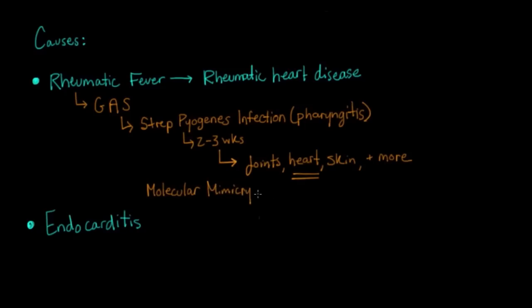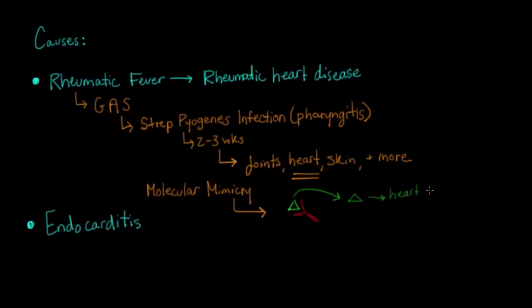What happens is — as I draw here — this green antigen is represented as a triangle, and this red antibody responds to it. The antigen is really going to be part of the bacteria that our body's immune system responds to with an antibody. But some of the antigens that Strep pyogenes puts out are actually very similar to some of the normal antigens or components of the tissue of the heart valves. So when you form an antibody response to the infection, those antibodies can actually go ahead and attack the heart.